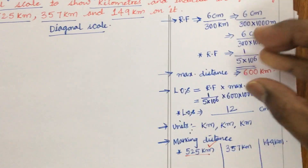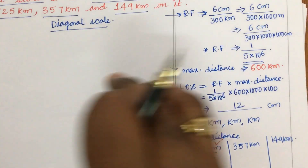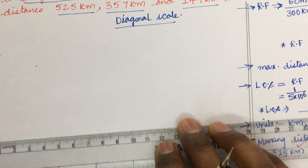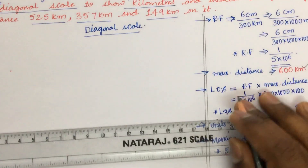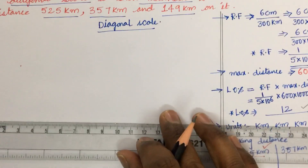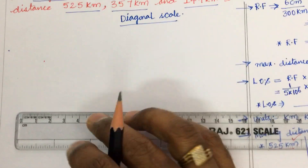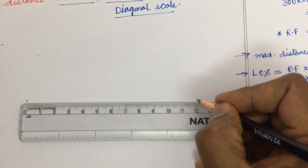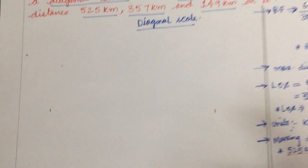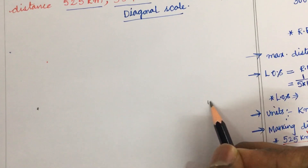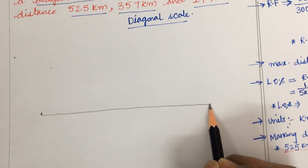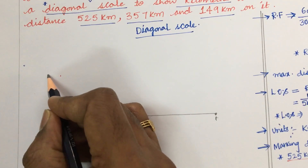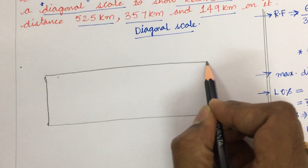If you skip this content and draw something incorrect in the drawing sheet, you will lose certain marks and the problem will be considered incorrect. So you must go with the construction process. The maximum distance is 600 km and the length of the scale is 12 centimeters. This 12 centimeter line needs to be plotted on the drawing sheet. As I am not working with the instruments and drafter, I will do a freehand sketch — please try to understand. This is the start point and this is the end point where the length of the scale is 12 centimeters.